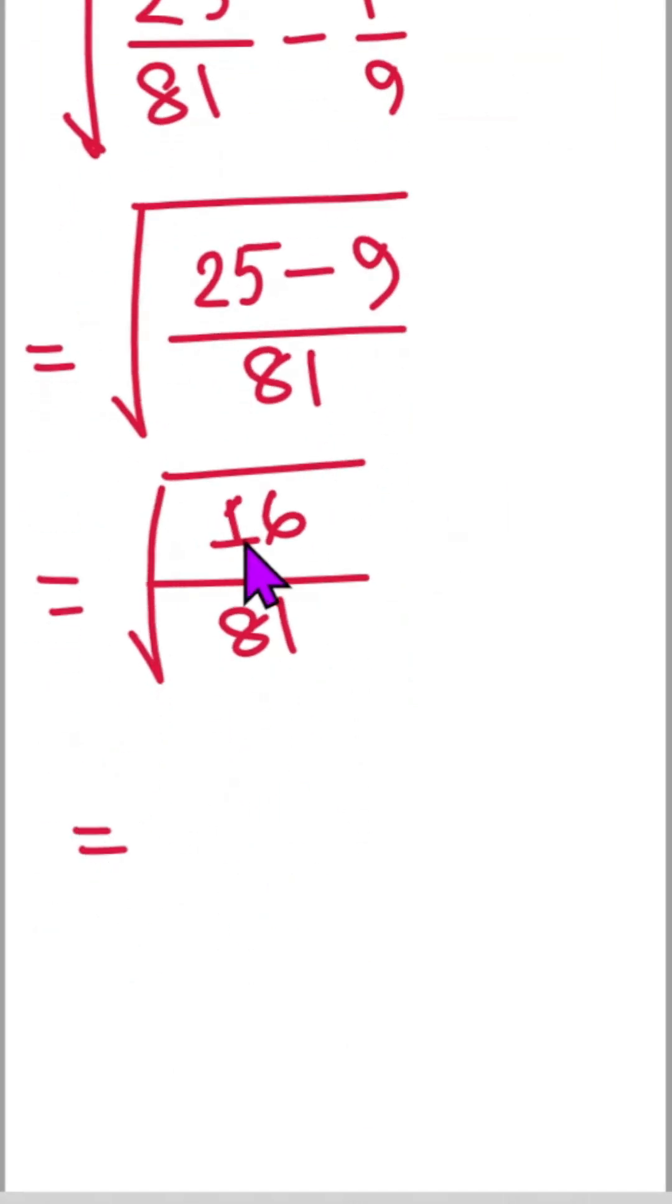So once we make a square root of 16, we will get 4 and once we make a square root of 81, we will get 9. So our answer is 4 by 9.